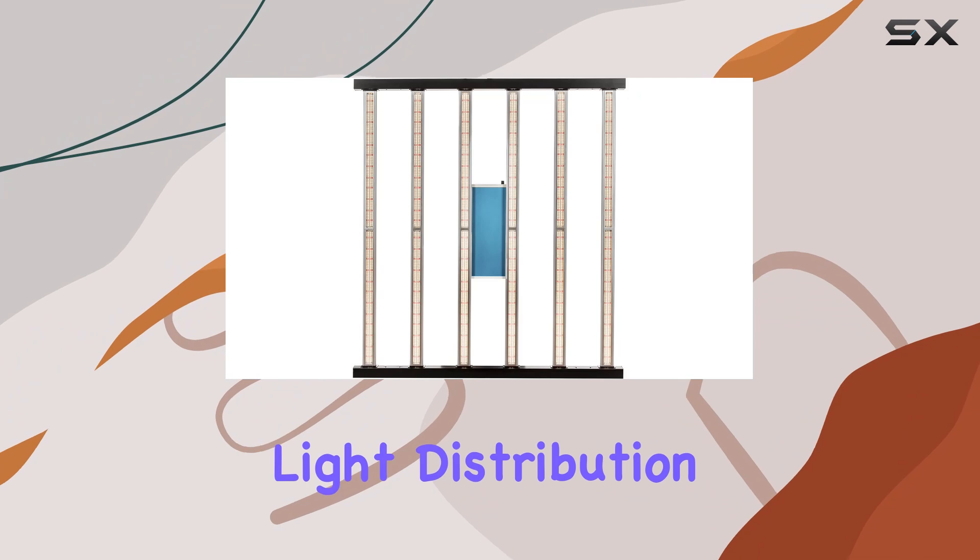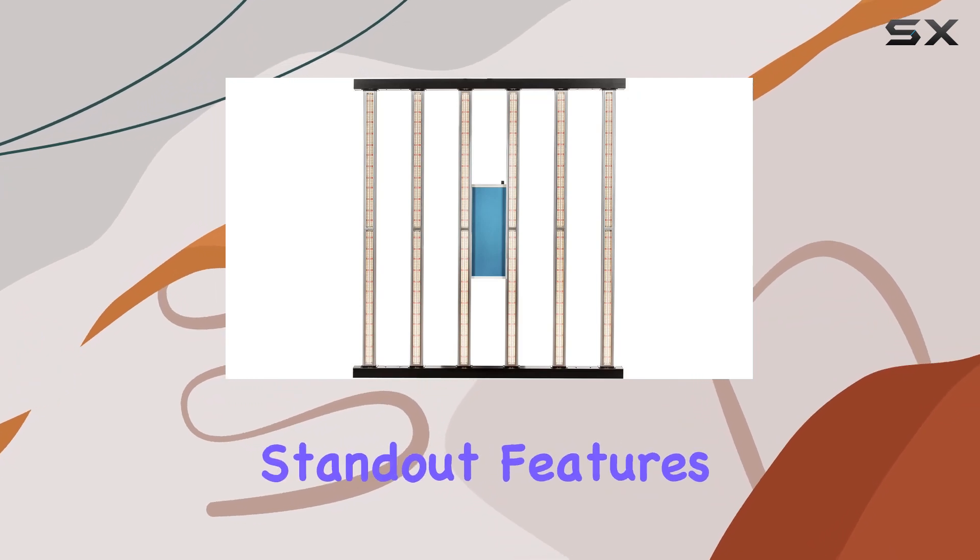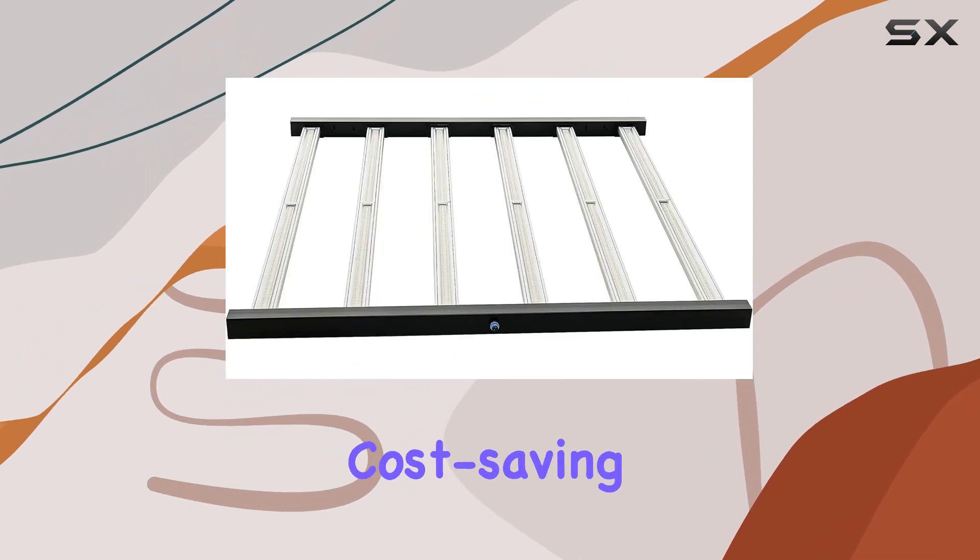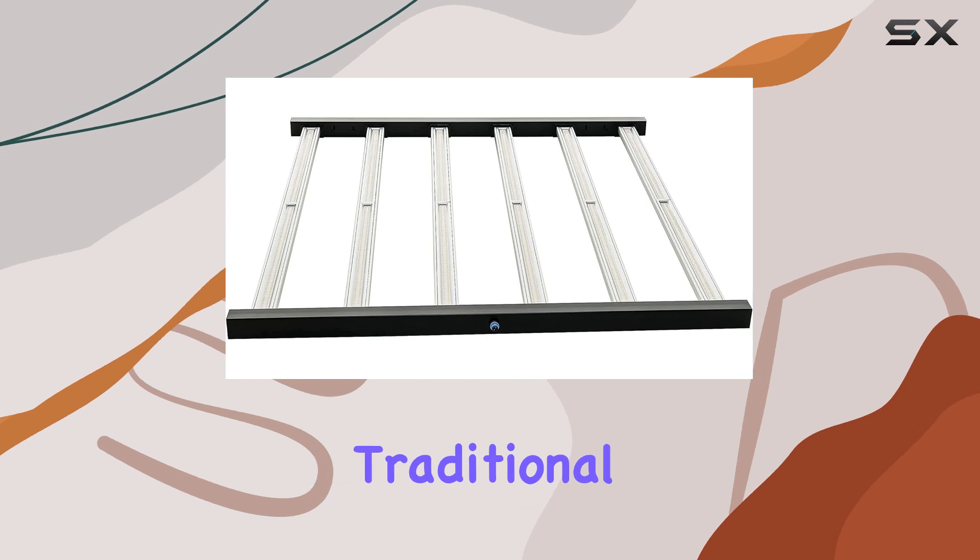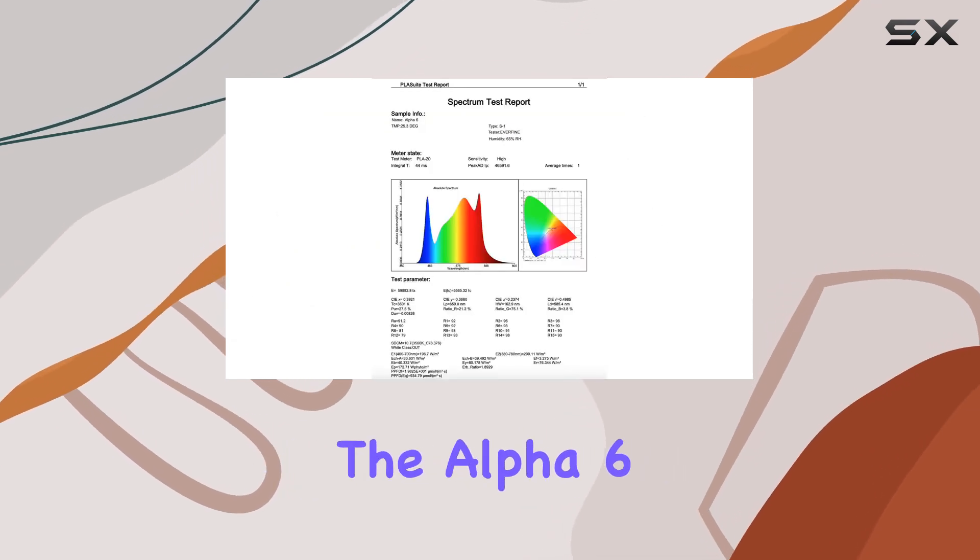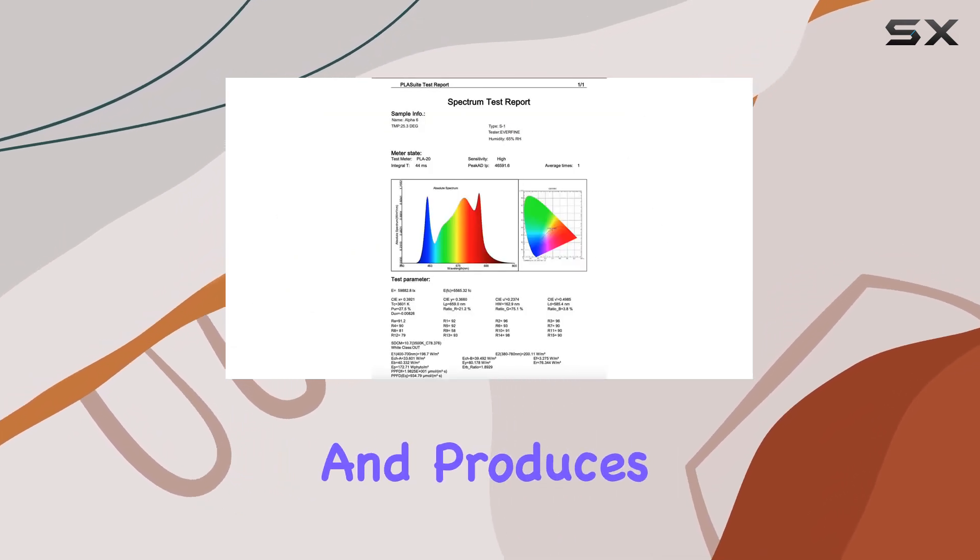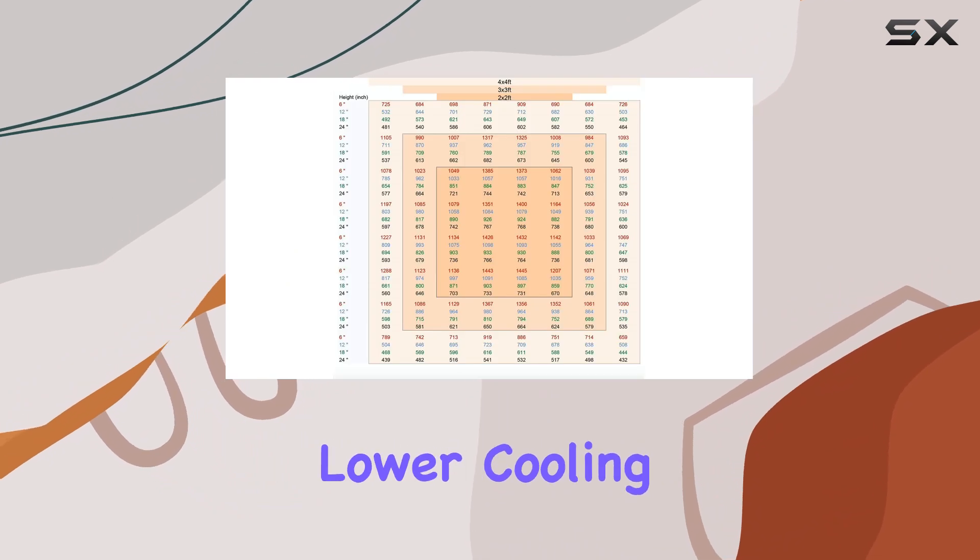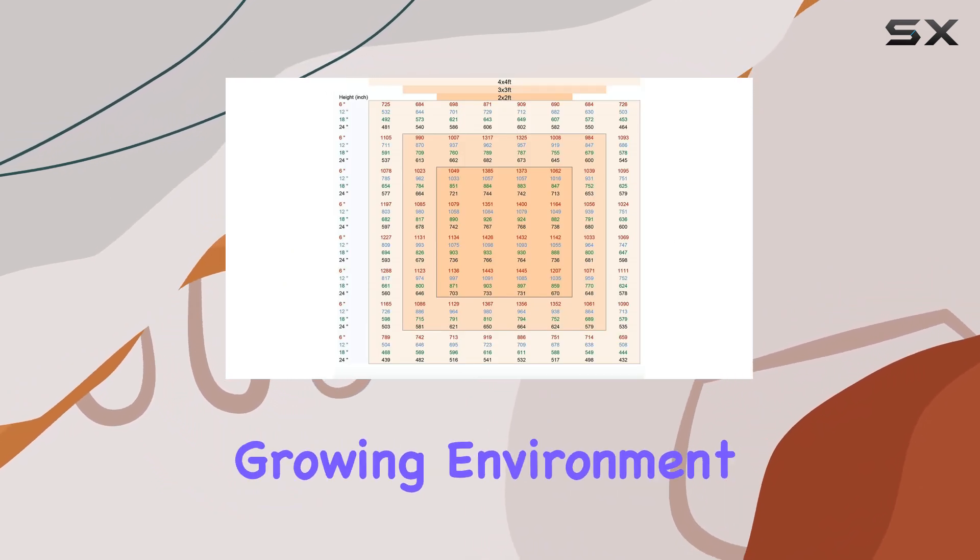One of the standout features of this grow light is its cost-saving efficiency. Unlike traditional light bulb systems, the Alpha 6 runs quietly and produces minimal heat, which means lower cooling costs and a more comfortable growing environment.